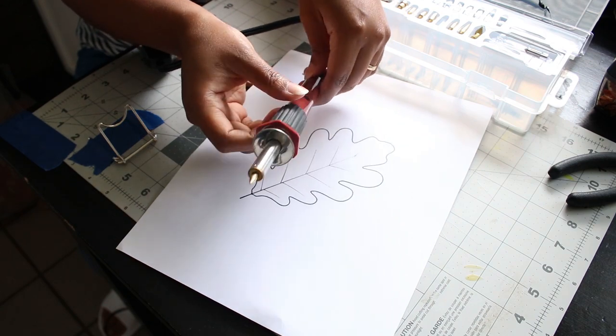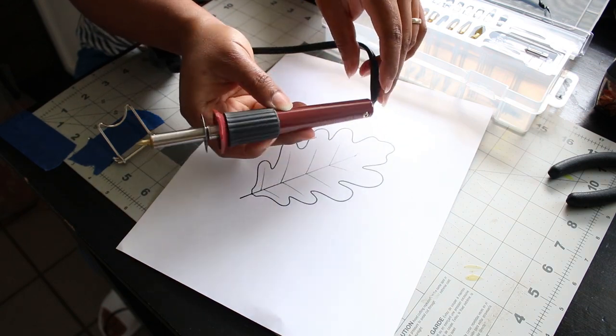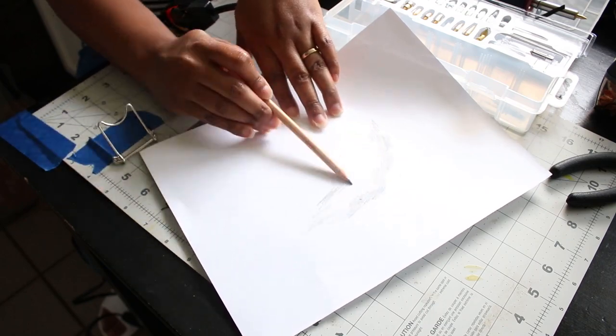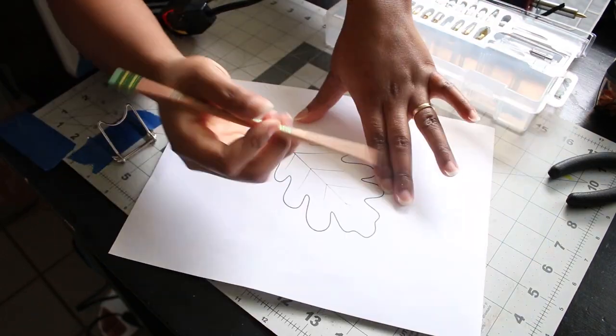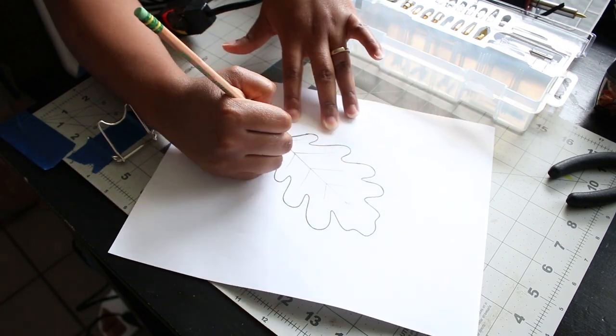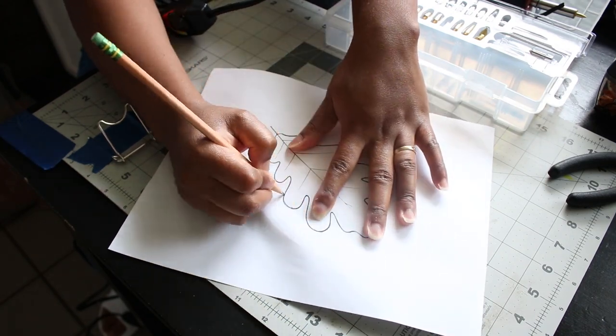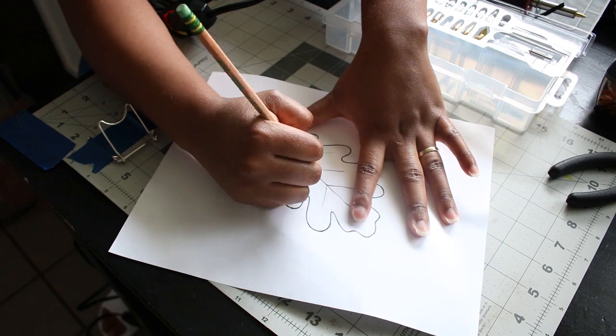So I printed out a leaf outline from Google. This is an oak leaf. And I'm going to burn it onto the wood with my new wood burning tool. So I shaded in the outline on the back side of the paper so I can trace it from the front and have the outline to follow with the wood burning tool.